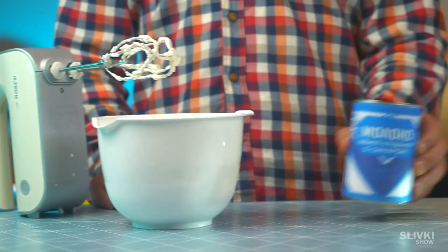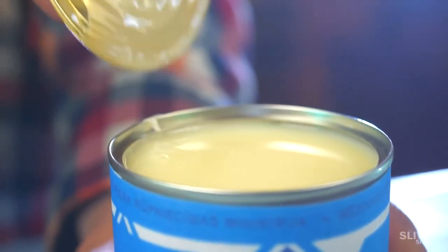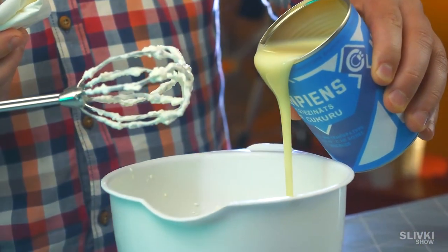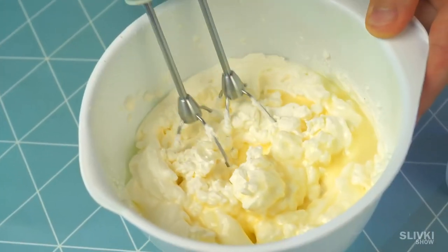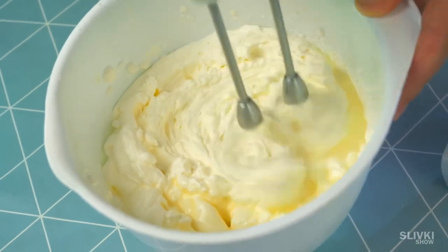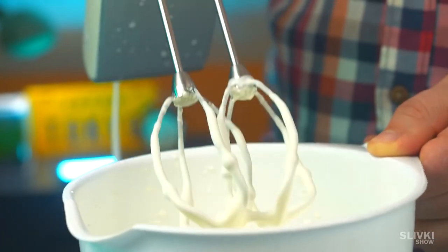Now take any condensed milk and pour less than half of our whipped cream there. Again, carefully mix everything, but do it quickly so it won't get warm.